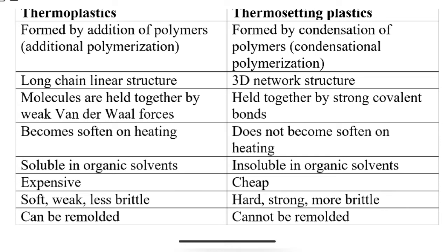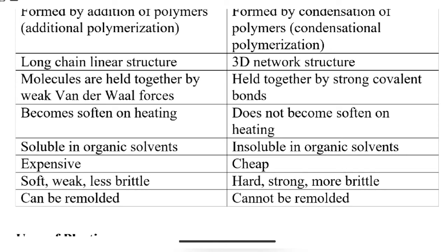On heating, thermoplastics soften and can be remelted, while thermosetting plastics cannot. Thermoplastics are soluble in organic solvents — organic meaning CHO (carbon, hydrogen, oxygen) — while thermosetting plastics are insoluble. In terms of cost, thermoplastics are more expensive and thermosetting plastics are cheaper. Thermoplastics are soft, weak, and less brittle; they can be remolded and reshaped, whereas thermosetting plastics cannot.